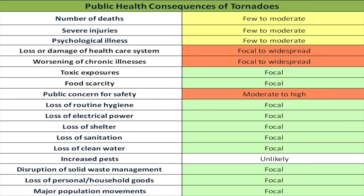Deaths can be few to moderate, depending upon early warning systems. Severe injuries can also be few to moderate, once again, dependent upon the population, how many people were there in its path.